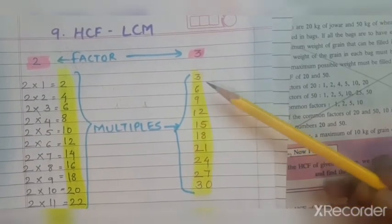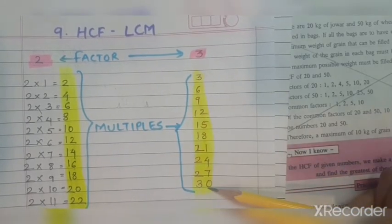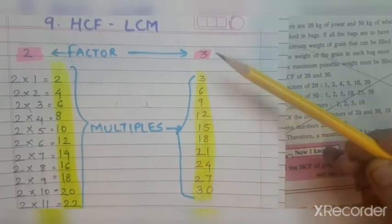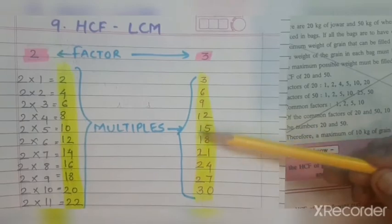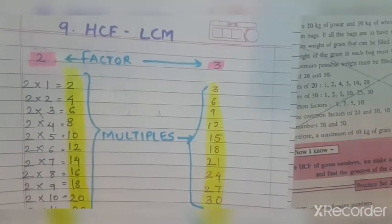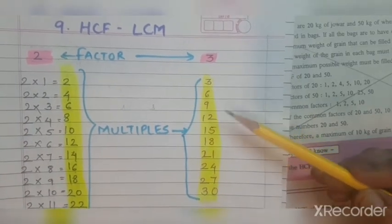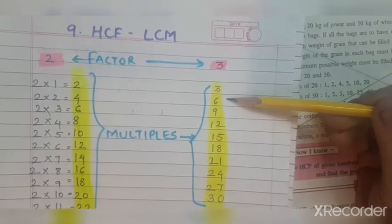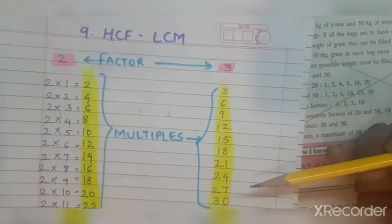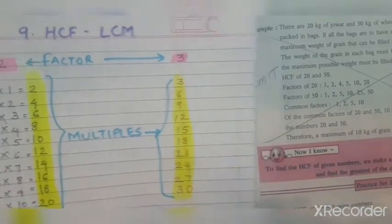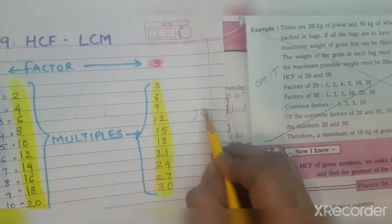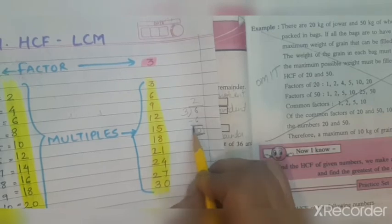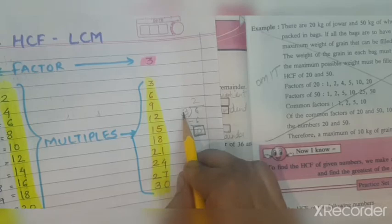Another example using the table of 3, written up to 3 tens. The numbers highlighted in yellow are the multiples of 3, and 3 is the factor of all these numbers. So when a number gets completely divided by a given number, the dividend is the multiple and the divisor is the factor. For example, 6 divided by 3: 3 twos are 6, remainder is 0 — so 6 is the multiple of 3 and 3 is the factor of 6.